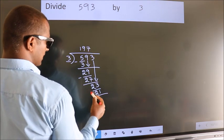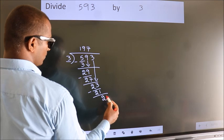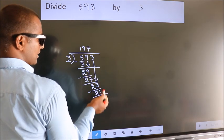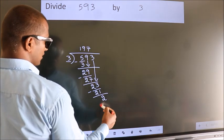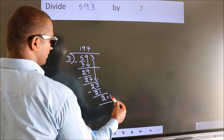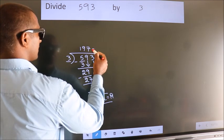Now, we subtract. We get 2. No more numbers to bring it down. So, we stop here. This is our remainder. This is our quotient.